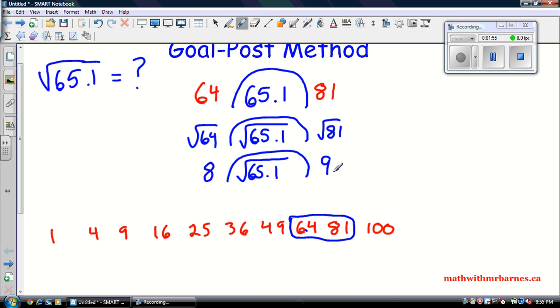So that's what the goalpost method allows us to do—break it down to an estimate of where this guy lies between. So now, if we want to use a number line, I know 64 is right here, 81 is right here, so 65.1 is probably somewhere really close to 64.